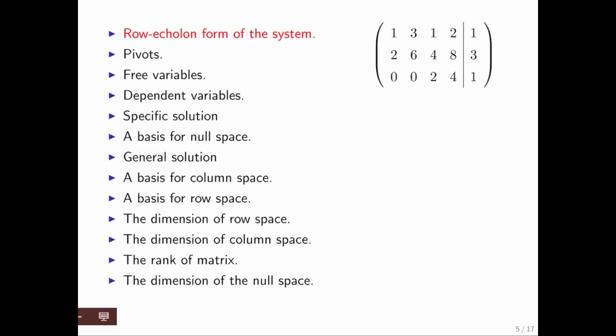The first thing is the row echelon form of the system, and that's given by this. The next thing you will want to do is identify the pivots. The pivots, our convention is that it's the first non-zero in each of the rows starting from the left. So these two are the pivots.